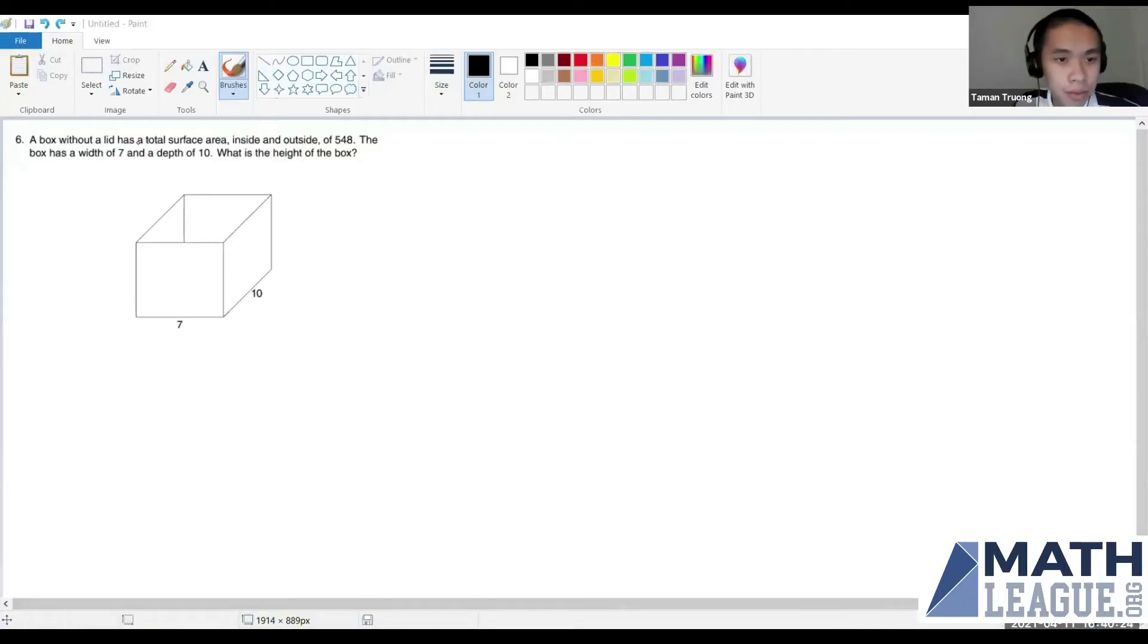Target number six. A box without a lid has a total surface area inside and outside of 548. The box has a width of seven and a depth of 10. What is the height of the box?